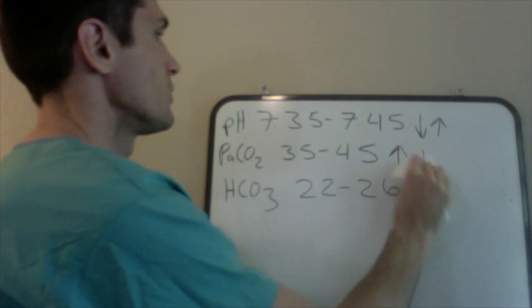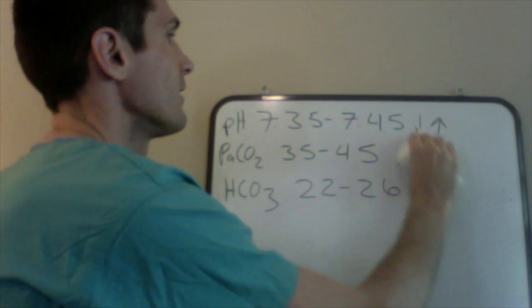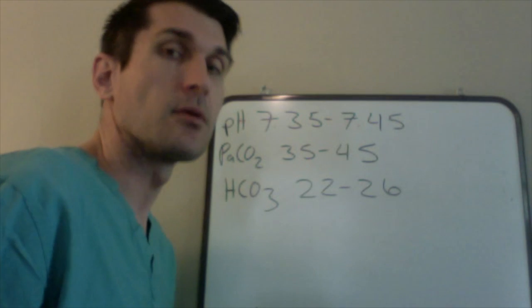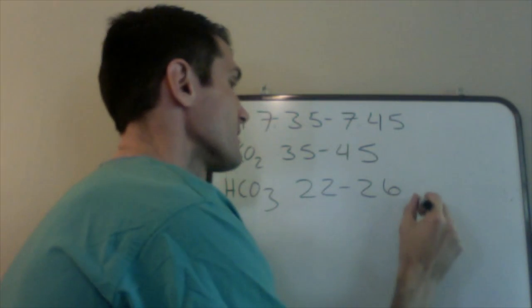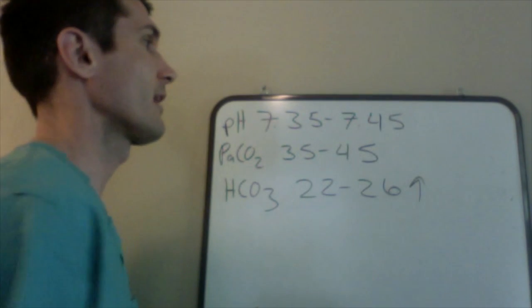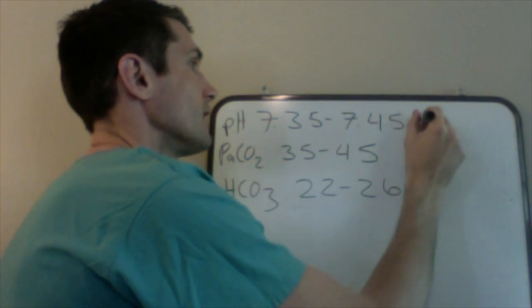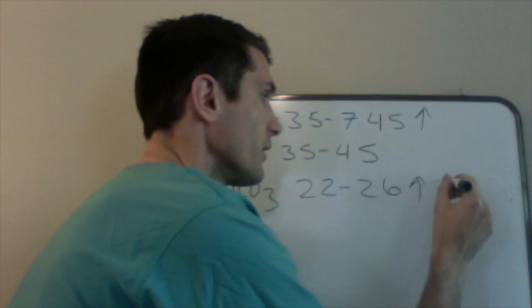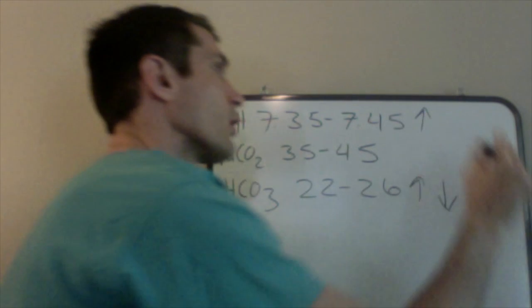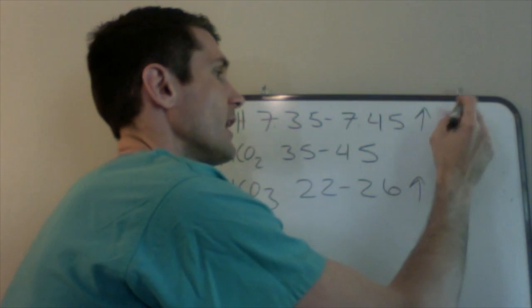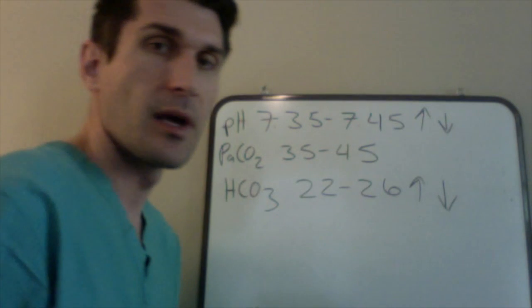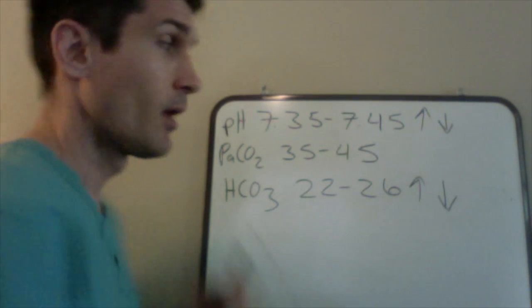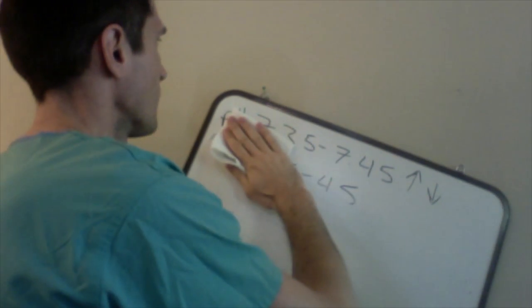And the opposite is true with bicarb. There's a direct relationship with that. This is a base, so when it goes up you're going to see an increase in the pH because you're looking at a more alkalotic or basic situation. And the same is true when the bicarb decreases. When we got a decrease in the bicarb, we're going to see a decrease in the pH as well, it's going to become more acidic. Does that make sense to everybody? That's pretty much basic nursing knowledge, so we're going to move on.